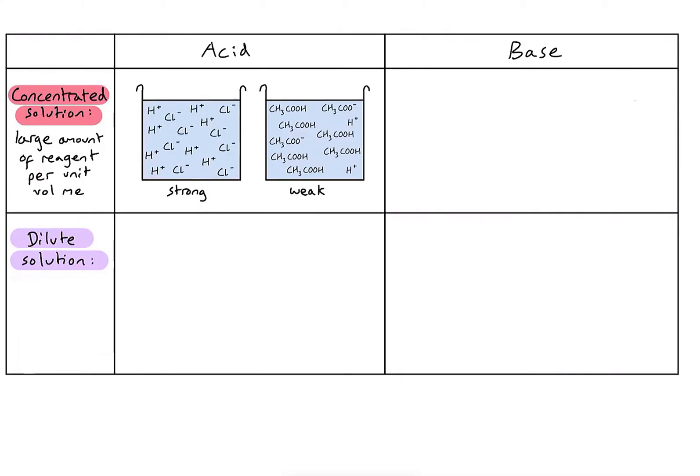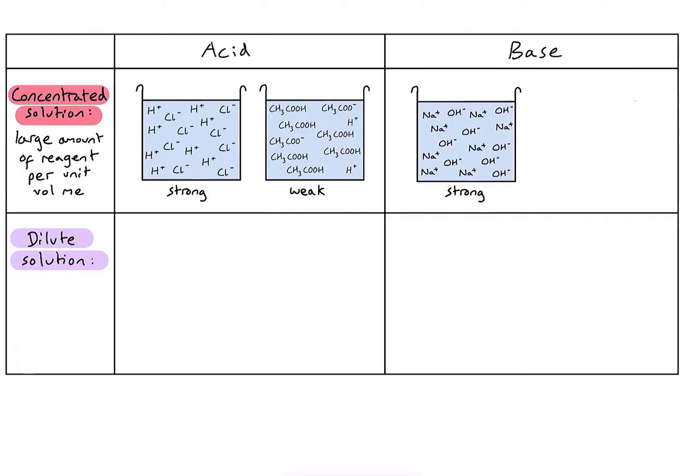Similarly for concentrated bases: a concentrated solution of sodium hydroxide has lots of material dissolved in the water. Because it's a strong base, all of those dissolved molecules are going to ionise to produce sodium ions and hydroxide ions.